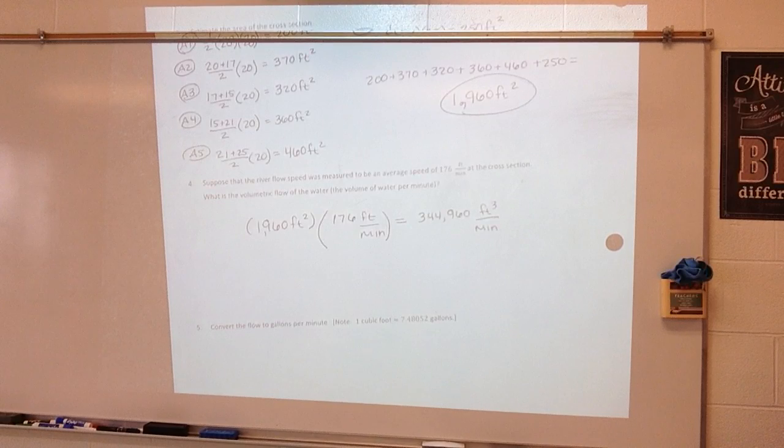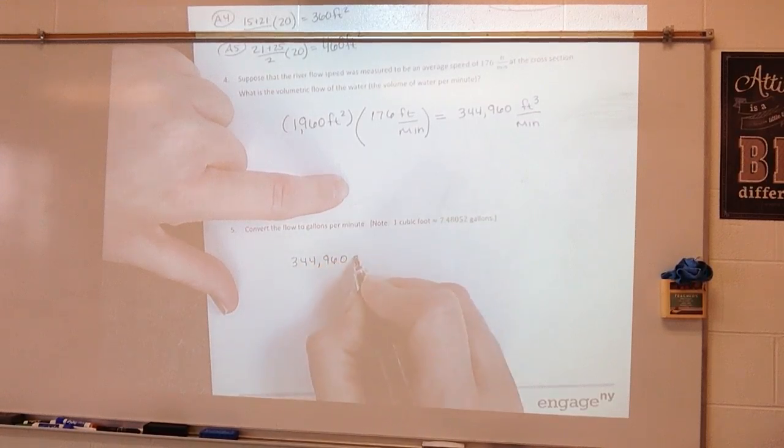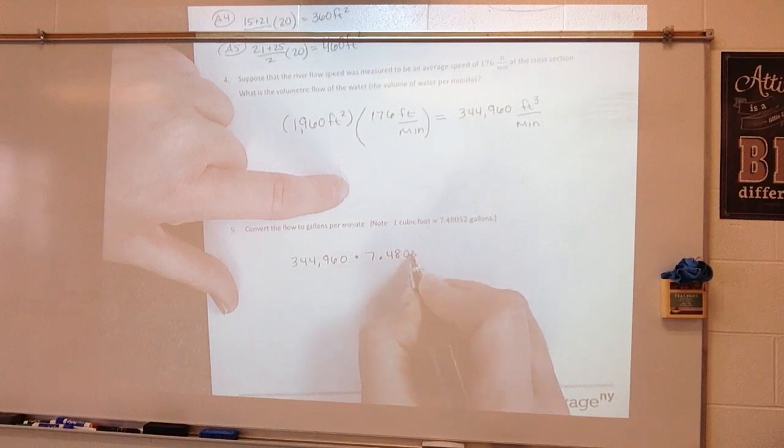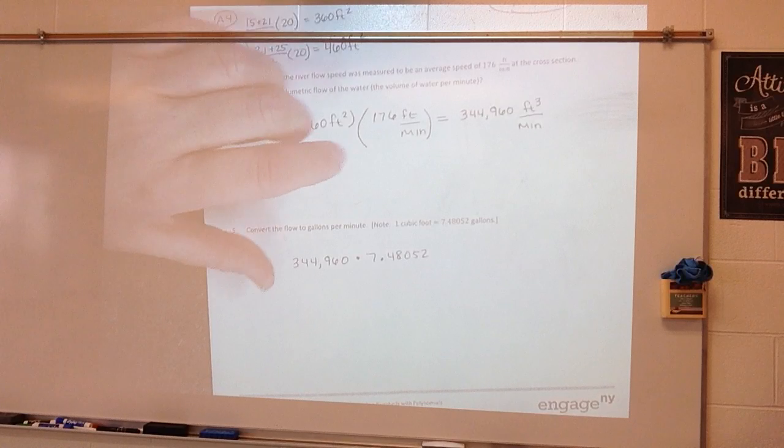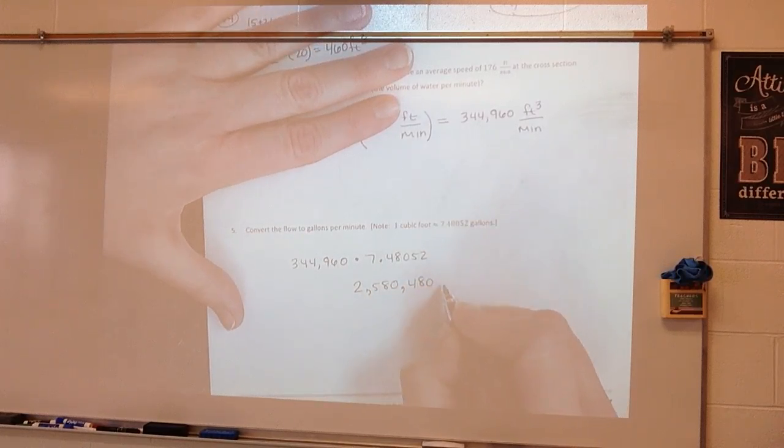It says convert the flow to gallons per minute. So one cubic foot is approximately 7.48052 gallons. So how would I do that? Well, it says to do an approximate because I don't know what that is. I don't know exactly. So I would multiply 344,960 times 7.48052 and it gives me approximately 2,580,480 gallons per minute which is what is flowing through that riverbank.